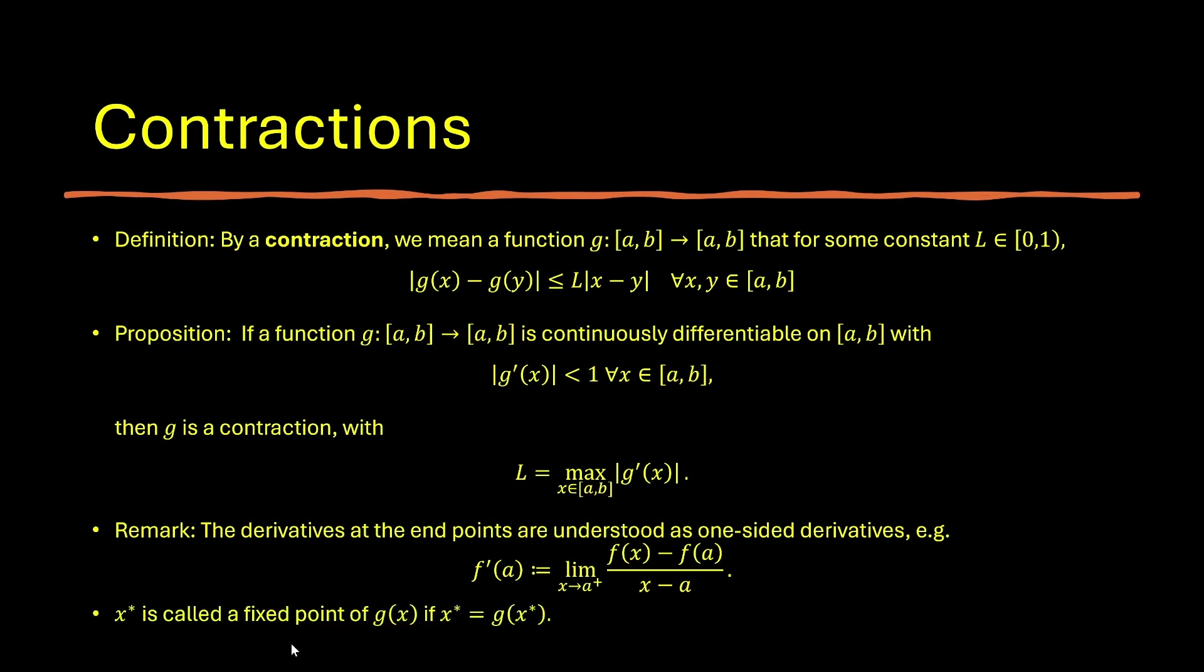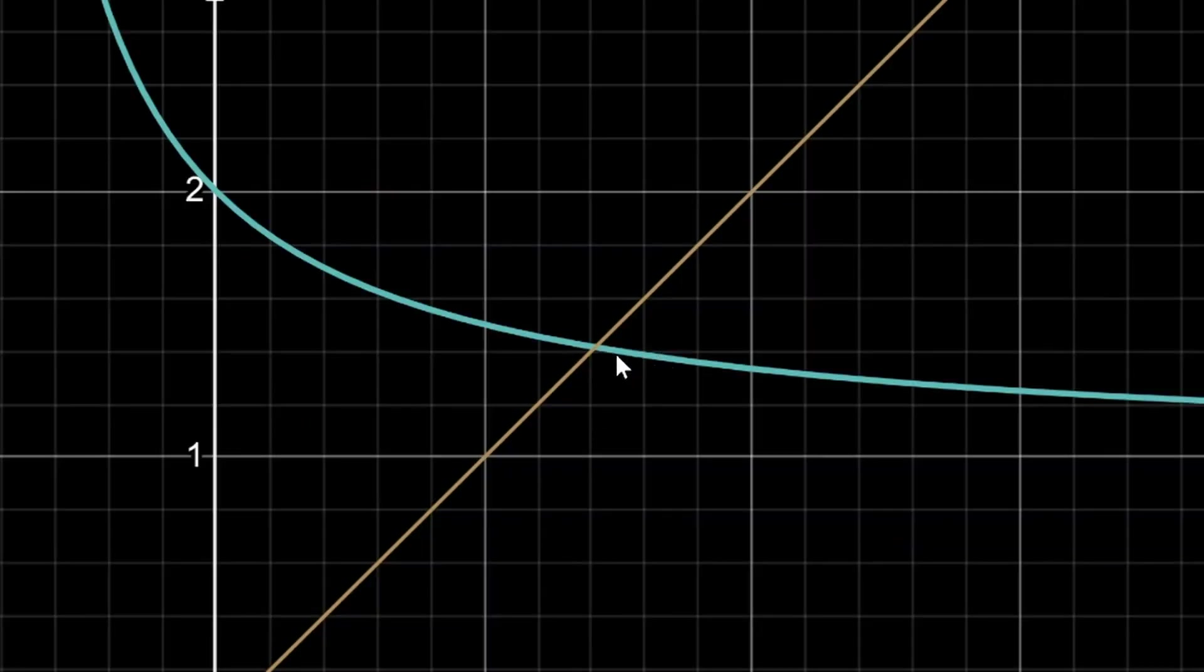And so lastly, we have a concept called a fixed point of a function. This is just the solution to the equation x equals to g of x. Remember, in our visualization, the fixed point corresponds to the intersection of the graph of the function f of x, this blue curve here, and as well as the straight line y equals x. So at this point, the function value equals to the value of the input.